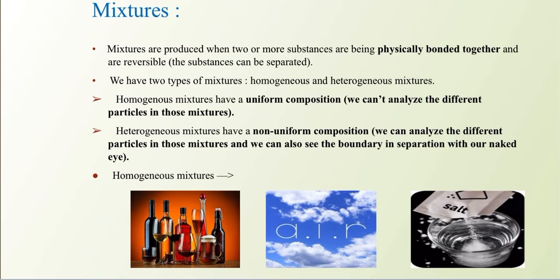We have two types of mixtures: homogeneous and heterogeneous mixtures. Homogeneous mixtures have a uniform composition, and this means that we can't analyze the different particles in those mixtures and also we cannot see the boundary of separation between those substances that have been physically bonded together. Heterogeneous mixtures have a non-uniform composition, meaning we can analyze the different particles in those mixtures and we can also see the boundary of separation with our naked eye.